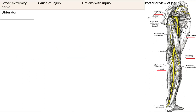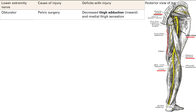If you're confident you can skip ahead, otherwise here's a brief review. The obturator nerve is located on the medial side of the thigh, and that location tells you everything. Deficits with injury include poor adduction of the thigh and loss of medial thigh sensation. It can be damaged with pelvic surgery.